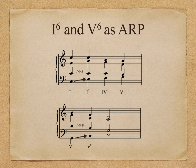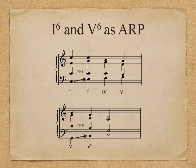Here is what the top example with I⁶ sounds like. Did you hear how the bass went from DO to MI and kept the same quality? Here is what the bottom example with V⁶ sounds like. This time the bass moved from SOL to TI, arpeggiating through the G major triad.